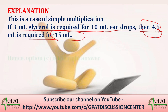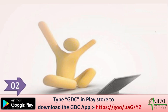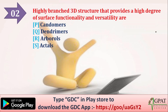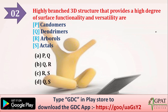The correct answer is C, that is 4.5 ml. Next question: highly branched 3D structures that provide a high degree of surface functionality and versatility are — P: candomers, Q: dendrimers, R: arboroles, S: acetals. The options are: A) P and Q, B) Q and R, C) R and S, D) Q and S. Which is the correct answer?